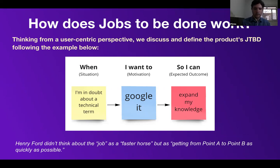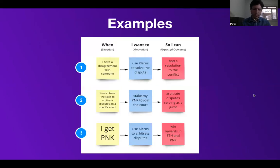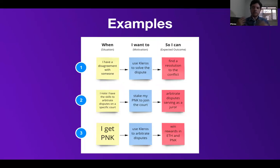For example: when I'm in doubt about a technical term, I want to Google it so I can expand my knowledge. Other examples mostly related to Kleros. We have three jobs. One: when I have a disagreement with someone, I want to use Kleros to solve the dispute so I can find a solution to the conflict. Number two: when I note that I have the skills to arbitrate a dispute on a specified court, I want to stake my PNK to join the court so I can arbitrate disputes serving as a juror. And number three: when I get PNK, I want to use Kleros to arbitrate disputes so I can win rewards in ETH and PNK.